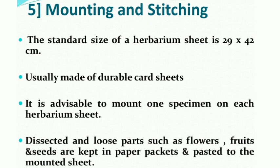Lastly, the dissected and loose parts such as flowers, fruits, and seeds are kept in paper packets and pasted onto the mounted sheet. If you collected dried fruits fallen from the plant or fallen flowers at collection time, you can keep them in a plastic sheet and attach that plastic cover to the herbarium sheet.